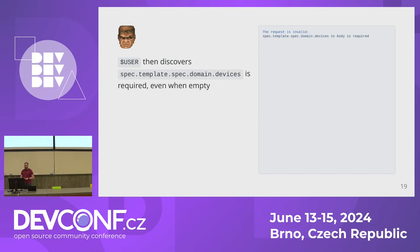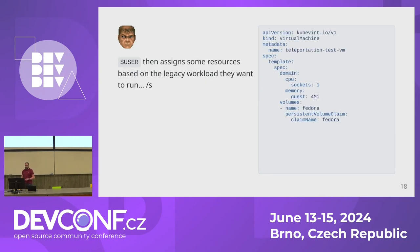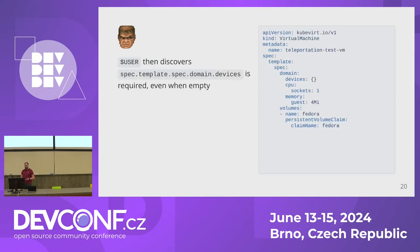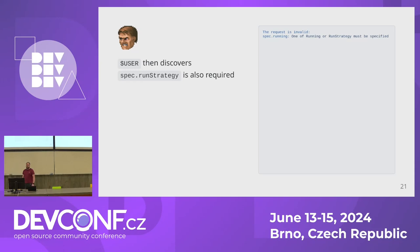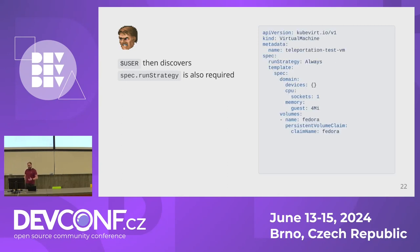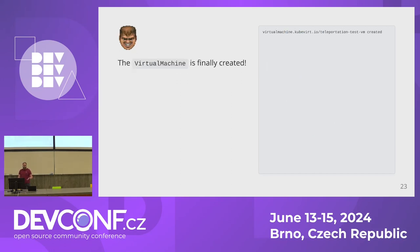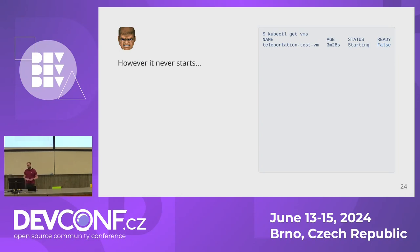Trying to submit this — it's rejected because you haven't provided a list of devices. You can see we're already at spec.template.spec.domain. Providing an empty device list, the next error is that no run strategy has been provided. Picking 'always' — meaning the VMI launches straight after the VM is submitted — the VM is created. But it never starts because it's only been given 4 megabytes of RAM. There are edges to the API and pitfalls, and we should be guiding users better instead of asking them to continuously hand-craft definitions.